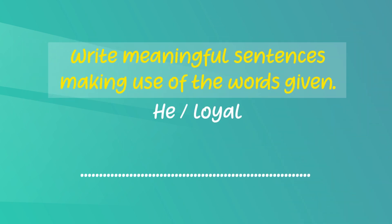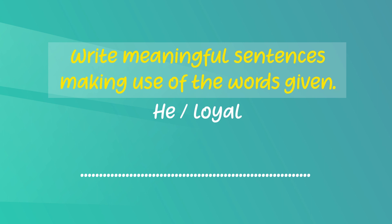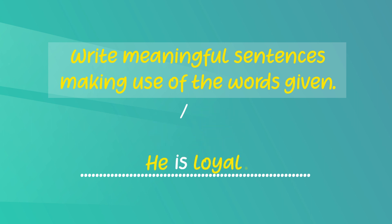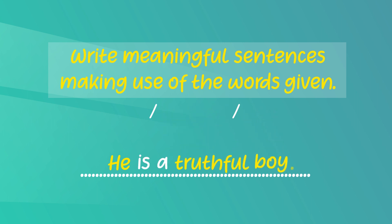Now let's see whether you can write sentences describing people on your own. The instructions say: write meaningful sentences making use of the words given. In the first one you have two words: he, loyal. The subject comes first and the verb comes after, so the sentence is: He is loyal. In the second one you have three words: he, truthful, boy. Remember, when you have an adjective and a noun you need an article, so the sentence is: He is a truthful boy.